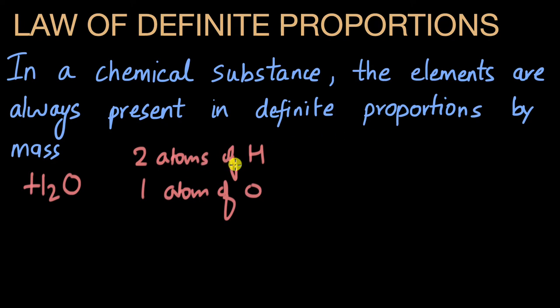This rule also extends to mass. We know that every atom has a mass of its own, and we know that one atom of hydrogen weighs one atomic mass unit, so two atoms will be 2 amu. One atom of oxygen has an atomic mass of 16 amu. From here I can say that the mass ratio of oxygen to hydrogen will be 16 is to 2, and this can be simplified to 8 is to 1.